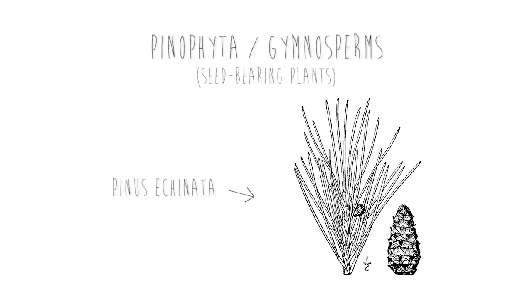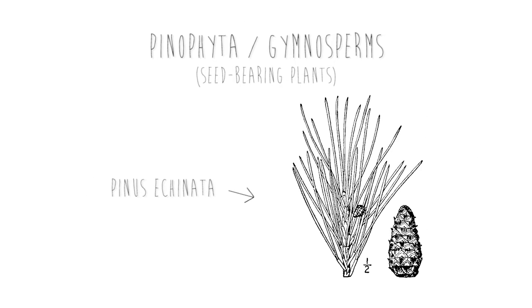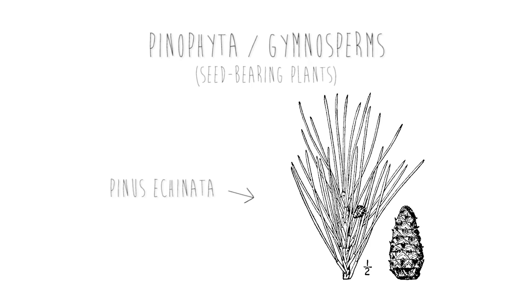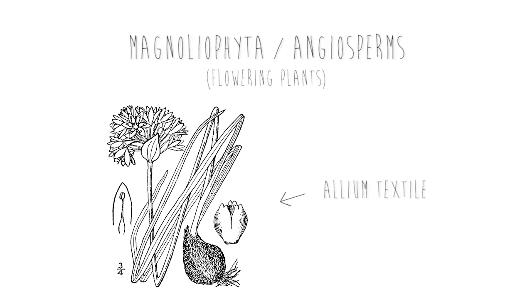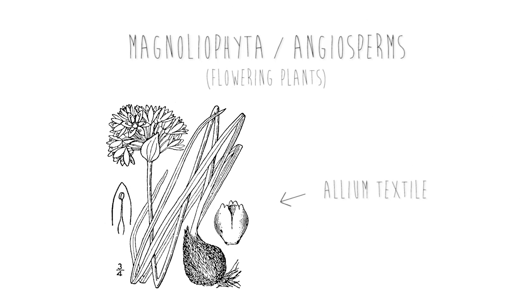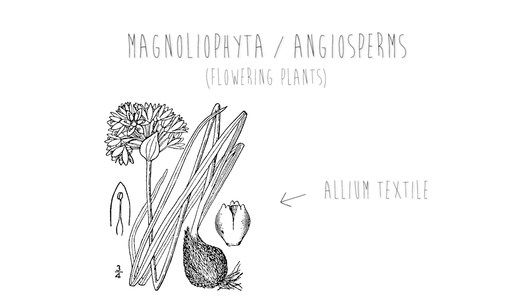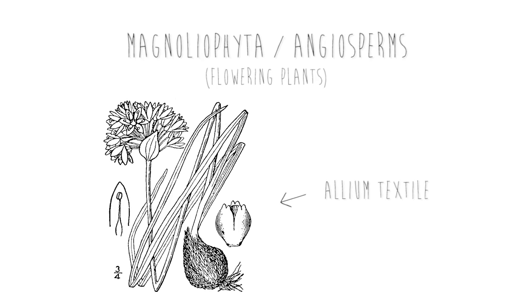The first major division of plants is between the seed-bearing plants called the pinophyta, or the gymnosperms, and the flowering plants called the magnolophyta, or the angiosperms.